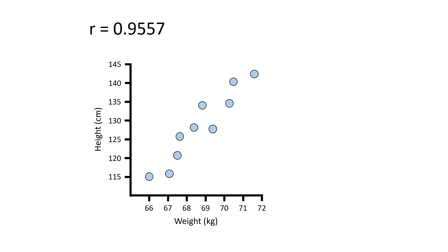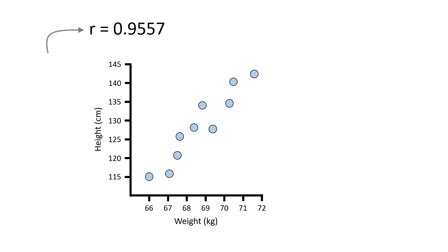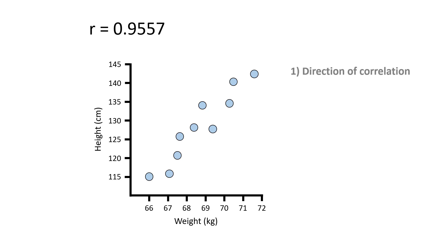r refers to the Pearson correlation coefficient. Just a note that r is usually written in lowercase in the literature, not uppercase R. This single value can tell us two things: it can tell us the direction of the correlation, and it can also tell us the strength of the correlation. So in this example, the correlation coefficient is 0.9557.